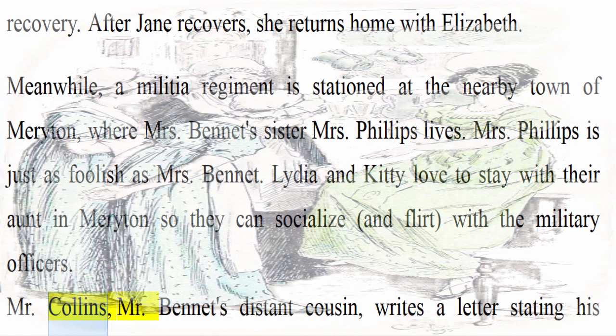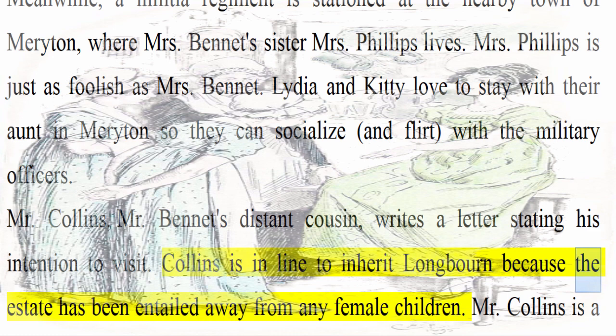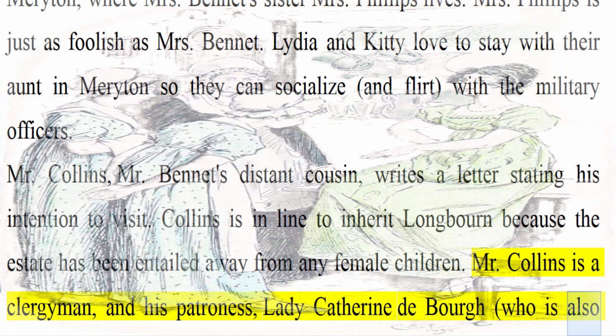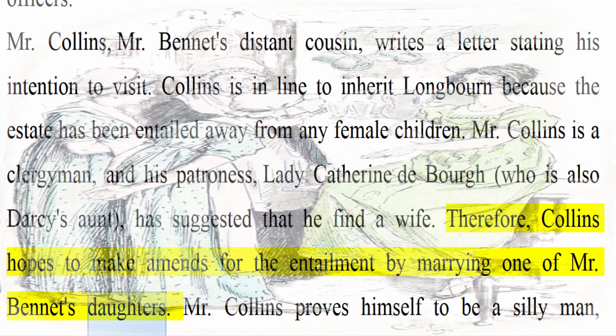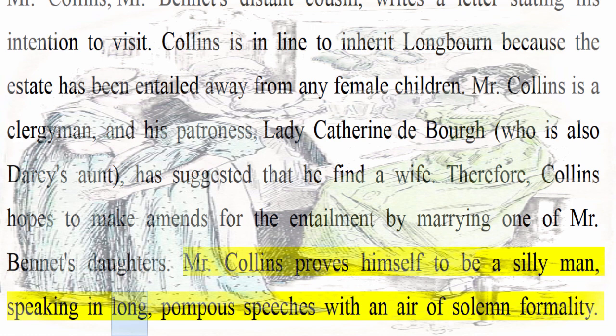Mr. Bennet's distant cousin Mr. Collins writes a letter stating his intention to visit. Collins is in line to inherit Longbourn because the estate has been entailed away from any female children. Mr. Collins is a clergyman, and his patroness, Lady Catherine de Bourgh, who is also Darcy's aunt, has suggested that he find a wife. Therefore, Collins hopes to make amends for the entailment by marrying one of Mr. Bennet's daughters. Mr. Collins proves himself to be a silly man, speaking in long, pompous speeches with an air of solemn formality.